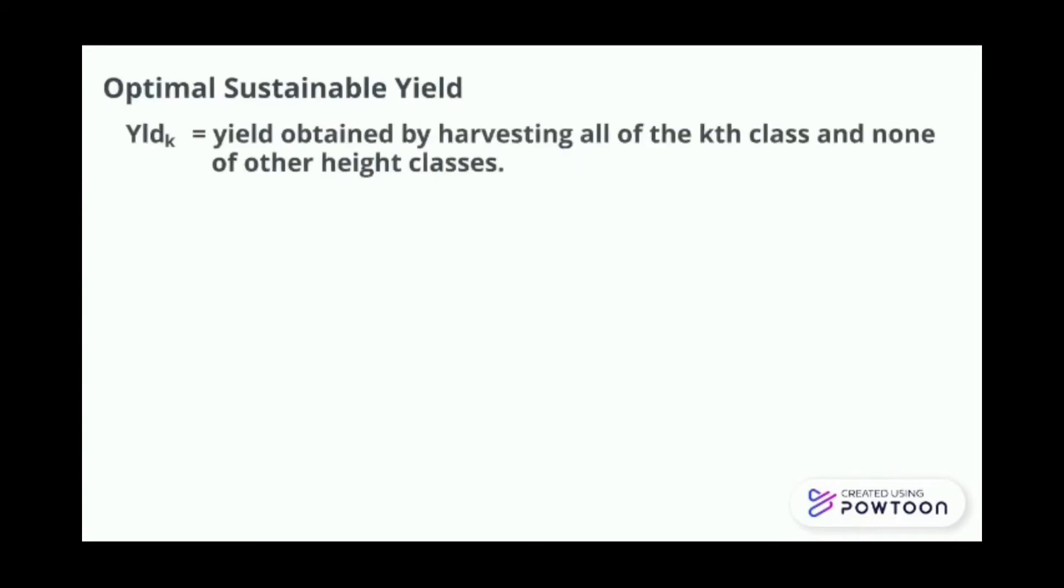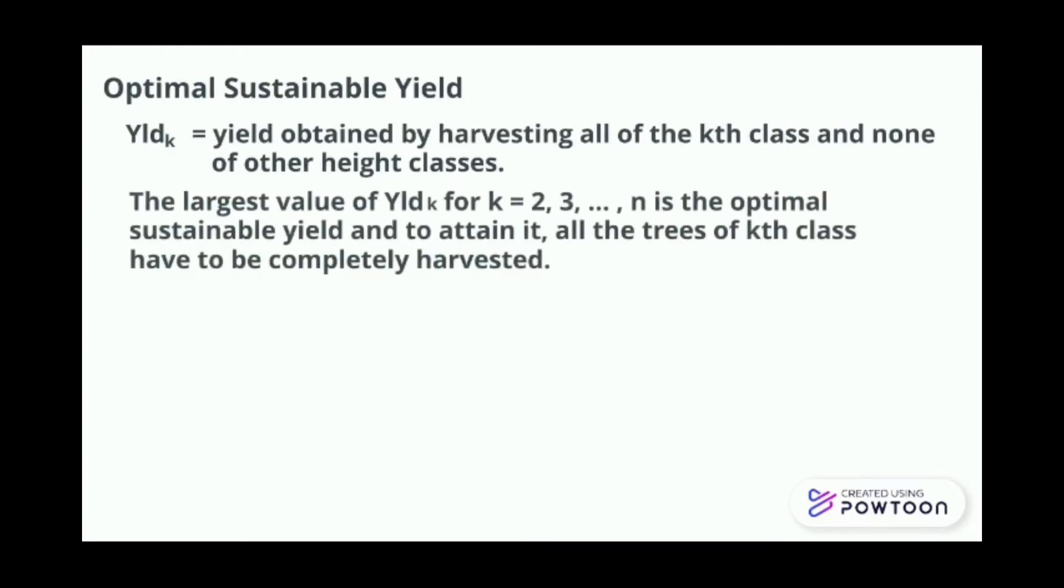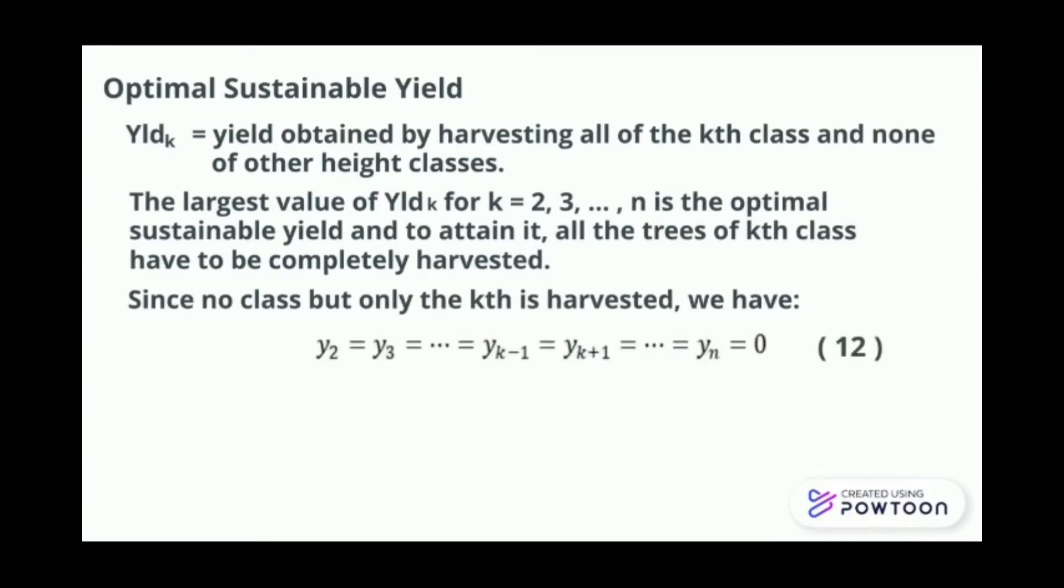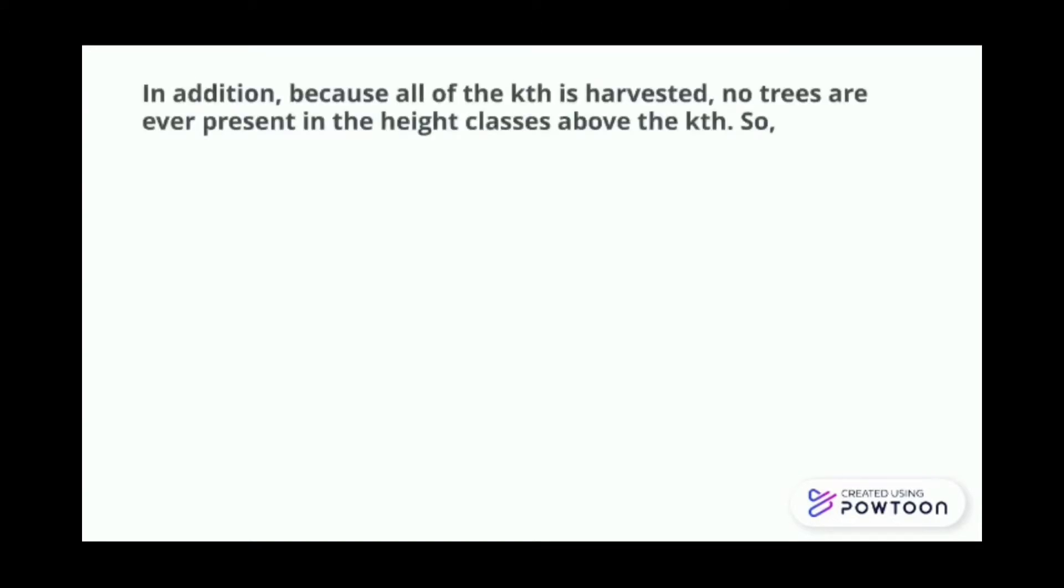Optimal sustainable yield is a yield obtained by harvesting all of the kth class and none of the other height classes. The largest value of the yield for k equals to 2, 3 until n is the optimal sustainable yield, and to attain it, all the trees of the kth class have to be completely harvested. Since no class but only the kth is harvested, we have. We label this as equation 12. In addition, because all of the kth is harvested, no trees are ever present in the height classes above the kth.